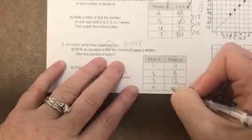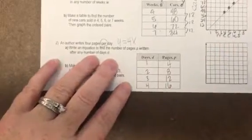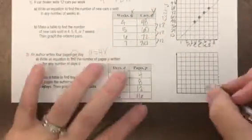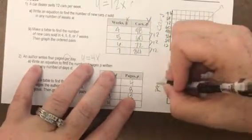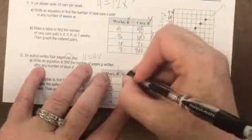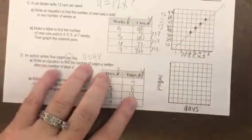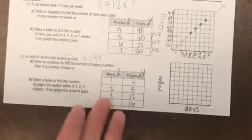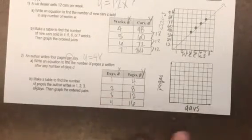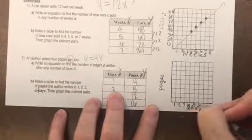So we're going to graph that. We're going to say days over here and pages on the y, because this is our x, this is our y. What did we say yesterday? That x is usually on your left and y is usually on your right. So it doesn't matter what letters they have, we know that this is our x, this is our y.